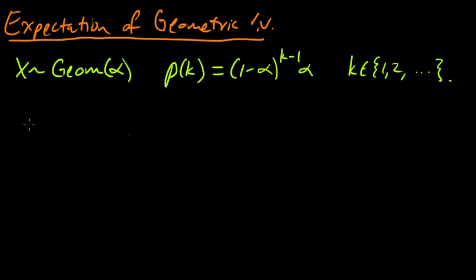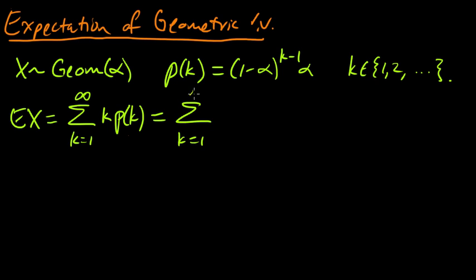So that's geometric, and the expectation of x is the sum over all the values it can take, so here k is going from 1 to infinity. So it's k times probability that x equals k. And so we'll plug this in. So k times 1 minus alpha to the k minus 1 times alpha. Well, alpha is a constant, so we can go ahead and pull that out. So we have alpha out front.